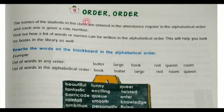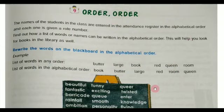We are discussing in this chapter about alphabetical order — ascending, descending order. You may have seen in the attendance register your name in alphabetical order, and also in the library some books are arranged in alphabetical order. The names of students in the class are entered in the attendance register in alphabetical order and each one is given a roll number. Alphabetical order means A, B, C, D like this.